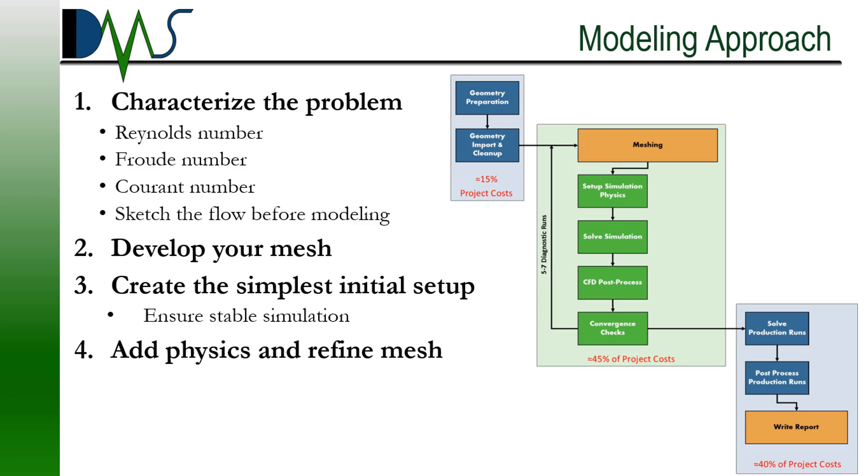Step number one is characterize your problem. Understand what type of a problem are you dealing with? Is it slow flow? Is it fast flow? Is it a simple problem? Is it a very complicated problem? Are there lots of interacting equations? Not many. One of the major tools that you're going to use for this are your non-dimensional coefficients, your Reynolds number, your Froude number, your Courant number. These are the big things. Also, pull out a sketch pad. Sketch out your problem and just try to characterize what you think the flow patterns will look like. That's already going to help you get an idea of where you think you're going to get areas of complicated flow.